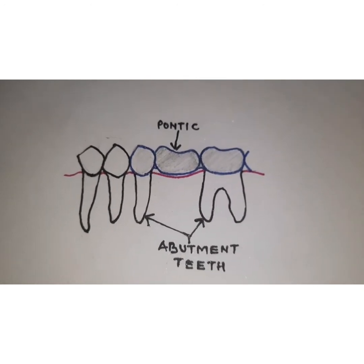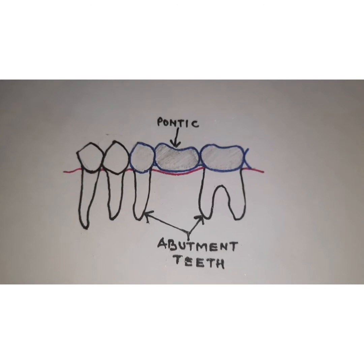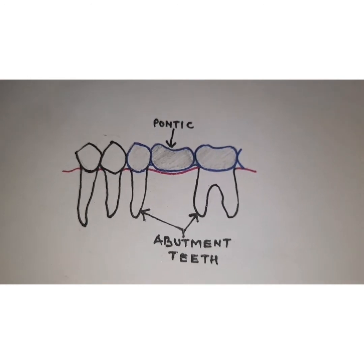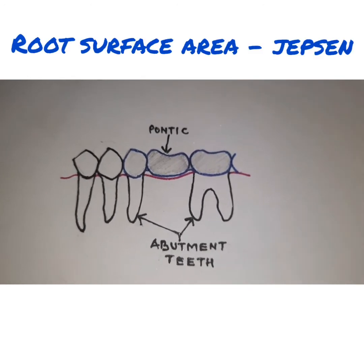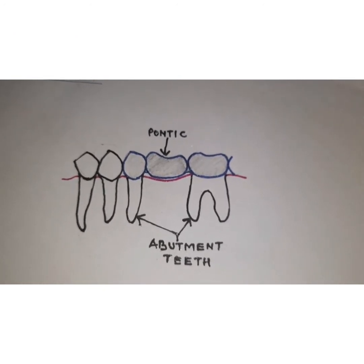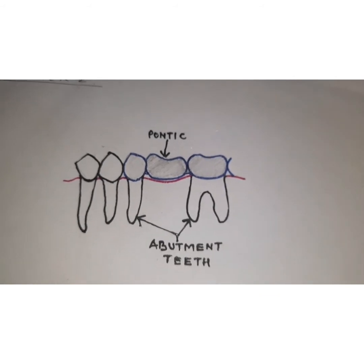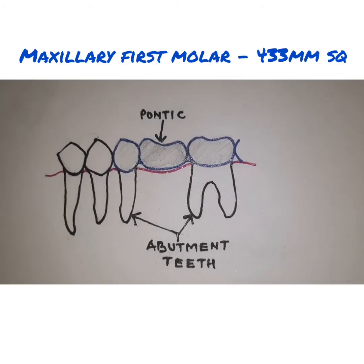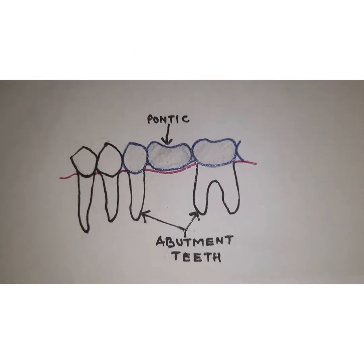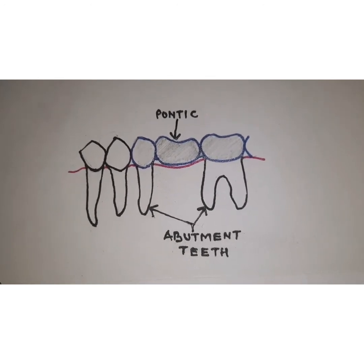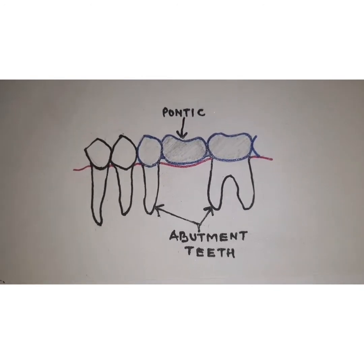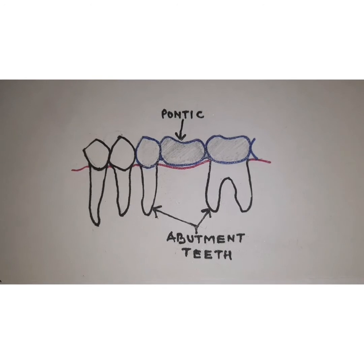In 1963, A. Jepsen gave the root surface area of all the maxillary and mandibular teeth. According to him, he found that the maxillary first molar had a combined periodontal area — an average area of around 433 mm². This was followed by the maxillary second molar which was 431 mm². The mandibular first molar also had a similar average root surface area of 431 mm².